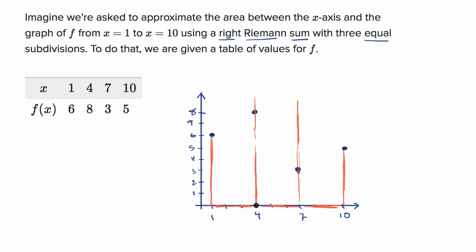Our right boundary is x equals four for the first section. What is f of four? It's eight. So we use that as the height of the first rectangle. For the second subdivision, the right boundary is seven, so the value of the function is three — that's our second rectangle. And last but not least, we use the right boundary of the third subdivision at x equals ten, where f of ten is five.